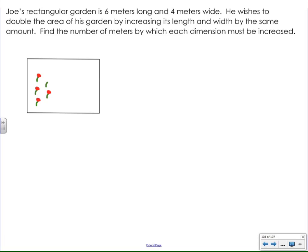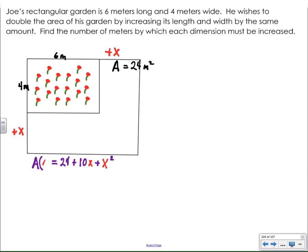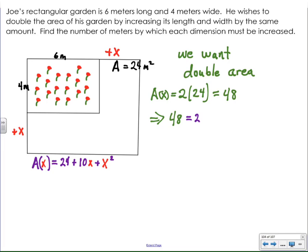To carry on then, I need to replicate the garden and the x. And now I have my area function. So now what I need to do is I need to double the area. In other words, I need to have an area that is twice the original area, or 48 square meters. What that means is I need to solve this equation. When does the area, what value of x, makes the area 48 square meters?